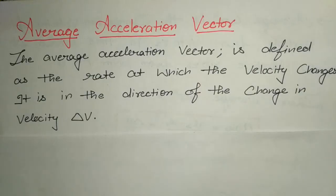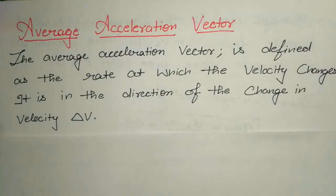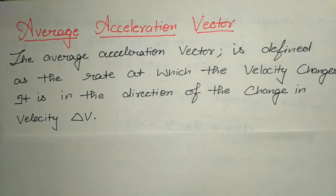Let's read out the statement. The average acceleration vector is defined as the rate at which the velocity changes. It is in the direction of change in velocity, delta V. That means the average acceleration vector is actually the rate of change of velocity, and the direction of change of velocity is the direction of the average acceleration vector.